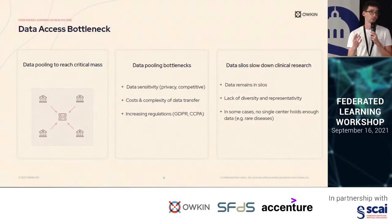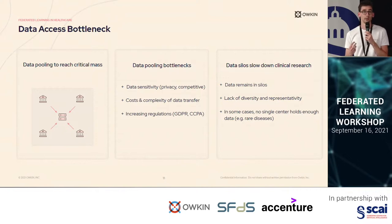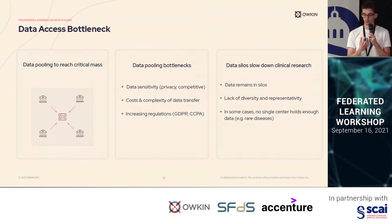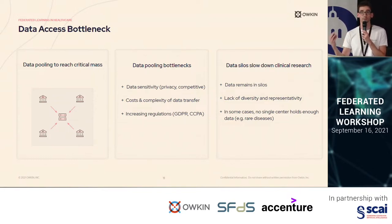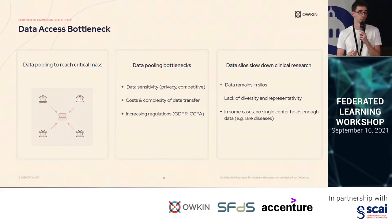This is the motivation for why Owkin is interested in federated learning. Indeed, in order to train a machine learning model, you need to pool data to reach a critical mass. But data is sensitive, in particular for healthcare — there are privacy issues. Also, data amassed by pharmaceutical companies is very competitive. There are costs and complexity of transferring data, and increasing regulations to monitor such transfers. Therefore, data remains in silos, which leads to a lack of diversity and representativity. For instance, if you have only data from a hospital in Nantes, it has only seen patients from Nantes with its environmental factors. And for rare diseases, no single center has enough data to train a machine learning model.